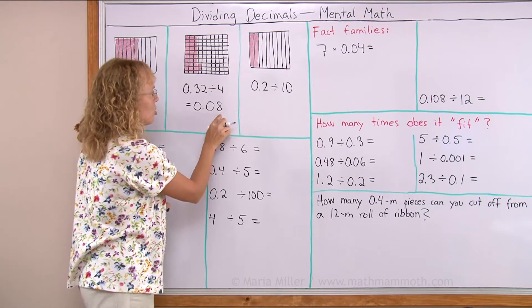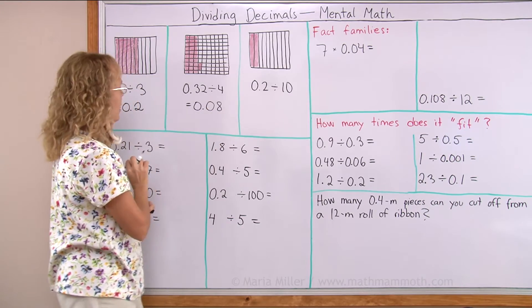Remember when there are two decimal digits, then you read it as hundredths. One decimal digit, tenths.